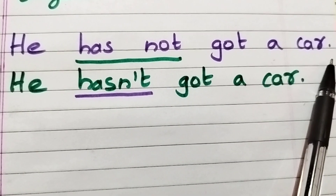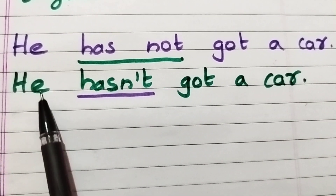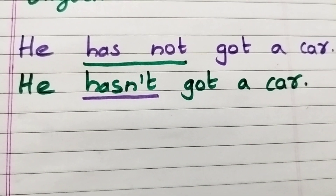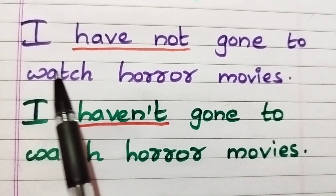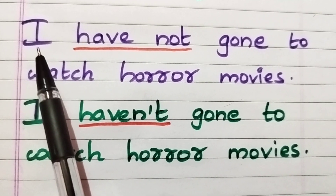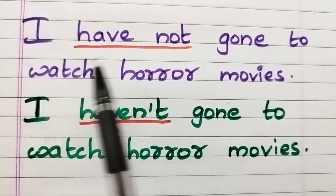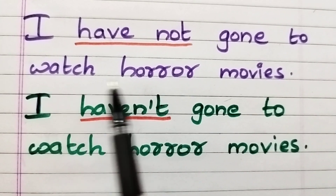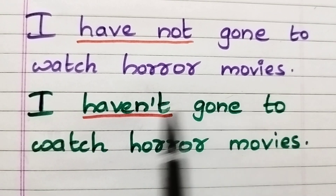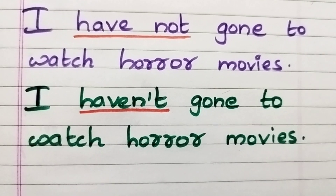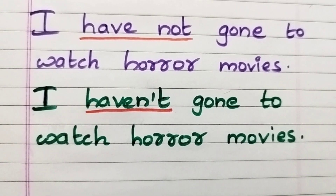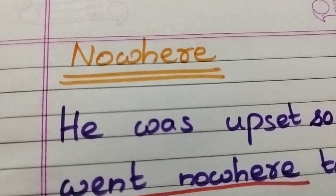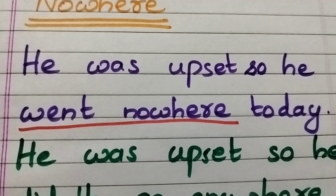Next: 'He has not got a car' or 'He hasn't got a car.' The next negative sentence: 'I have not gone to watch horror movies' or 'I haven't gone to watch horror movies.'